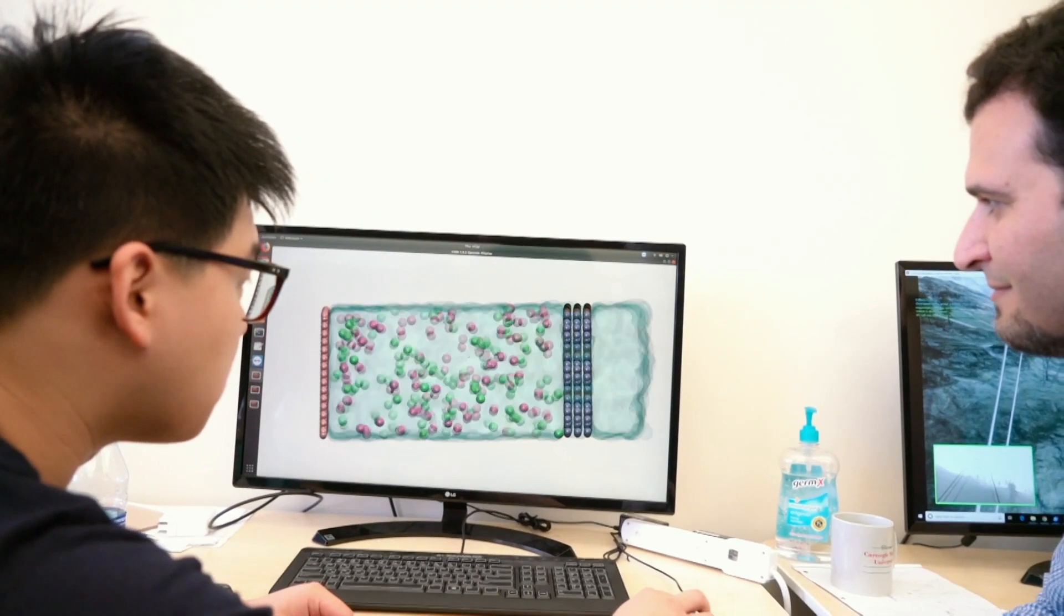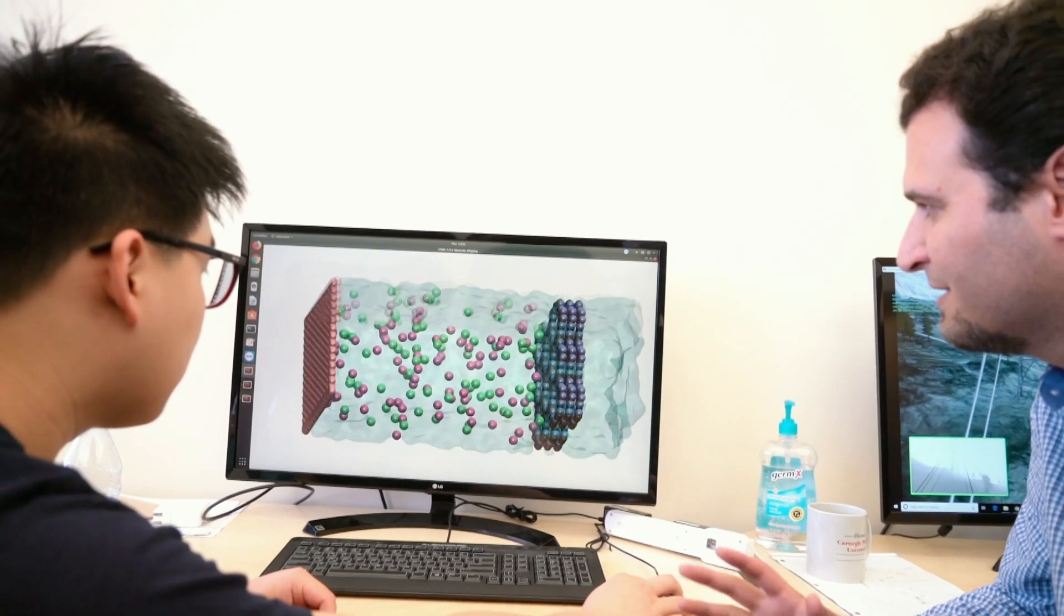But now at Carnegie Mellon University, we were able to find a material called metal-organic frameworks which are intrinsically porous. Also, they can be as thin as two or three layers, which makes them really competitive compared to graphene and MOS2.